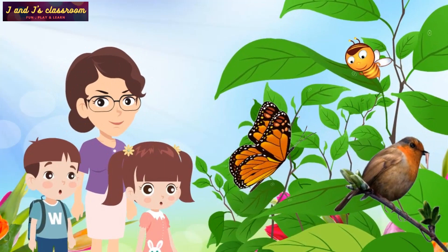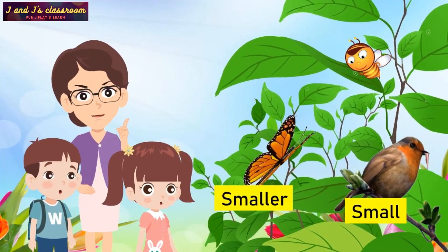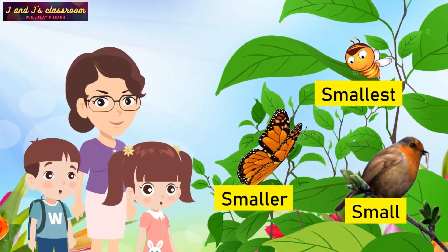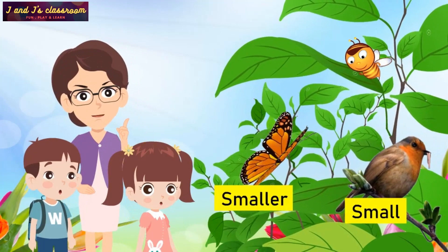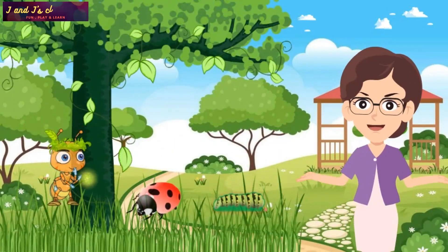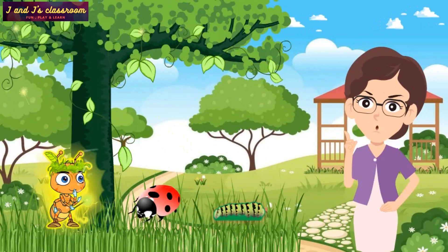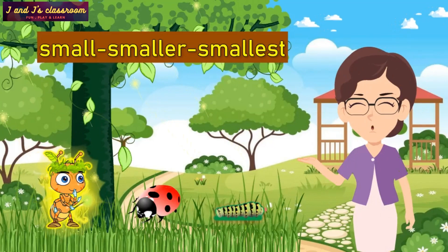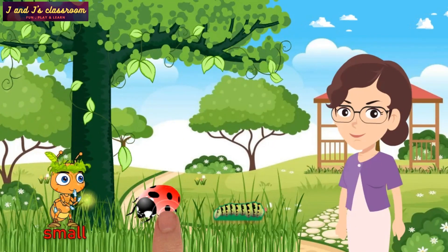Children, now we are in the garden to notice the small animals. Small, smaller, smallest. Children, now it's your turn. Please arrange these insects in order of small, smaller, and smallest.